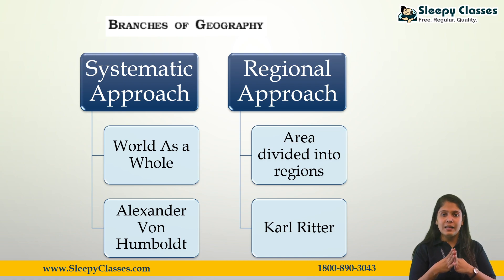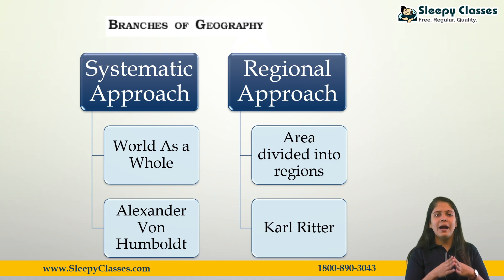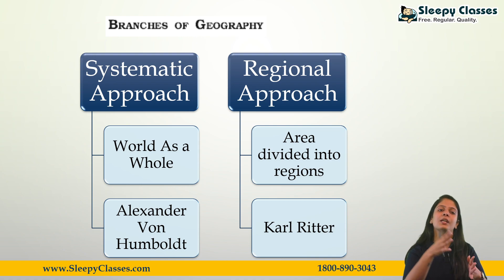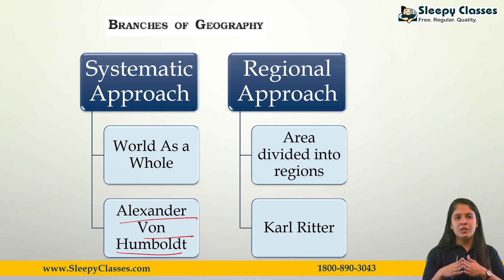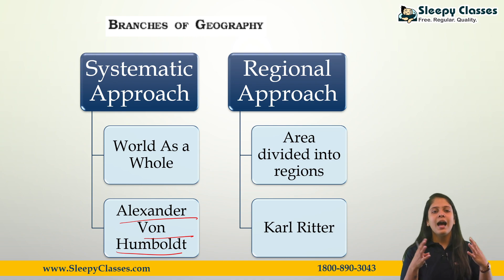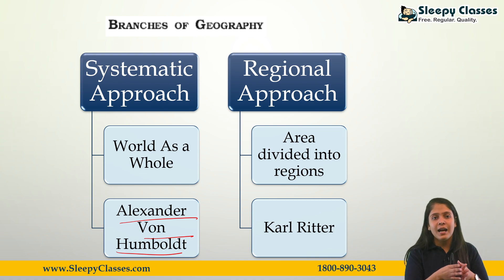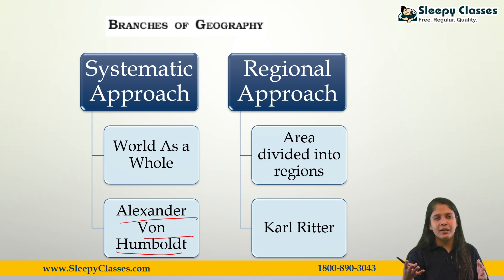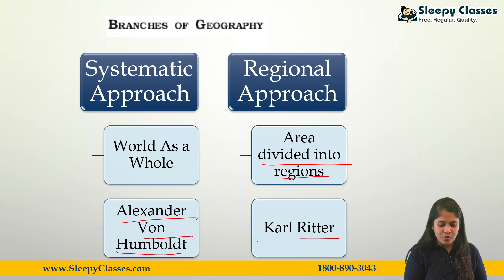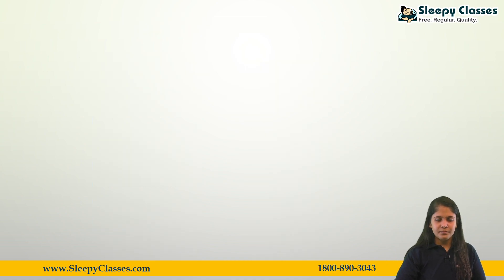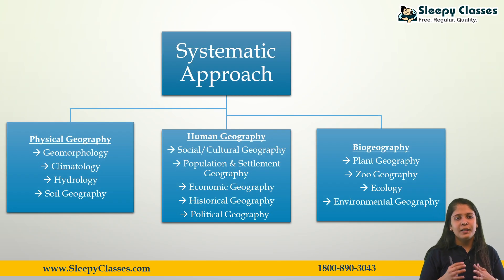Now, the branches of geography and the approaches to study it. The systematic approach involves studying geography as a whole — the entire world or universe's geography together, then drawing comparisons. This was given by Alexander von Humboldt, a German geographer. The regional approach divides a particular area into smaller regions and studies each separately before comparing. For example, studying world geography as a whole is systematic, whereas dividing it into continents and studying each separately is regional. The regional approach was given by Carl Ritter, who was a student of Humboldt.